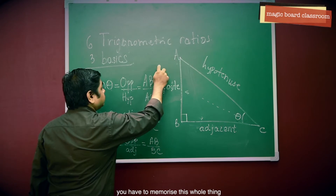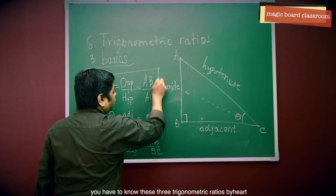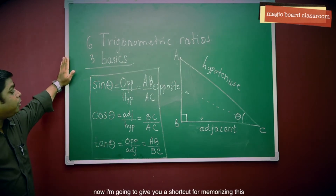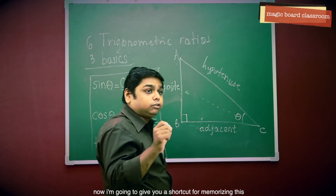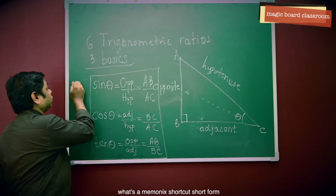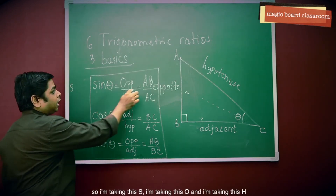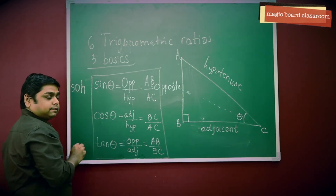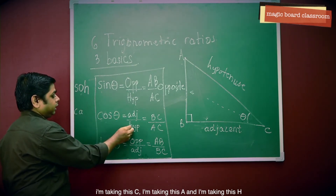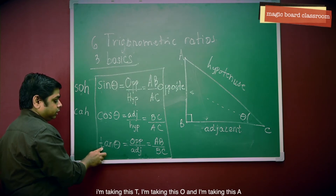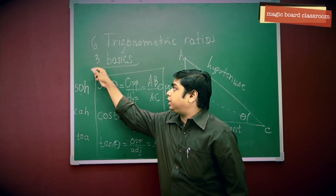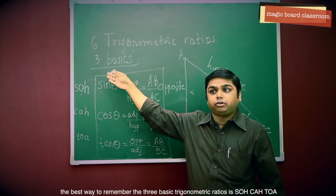You have to memorize these three trigonometric ratios by heart. I am going to give you a shortcut for memorizing them — you make a mnemonic. Taking the first letters: S for sine, O for opposite, H for hypotenuse gives SOH. C for cos, A for adjacent, H for hypotenuse gives CAH. T for tan, O for opposite, A for adjacent gives TOA. The best way to remember the three basic trigonometric ratios is SOHCAHTOA.